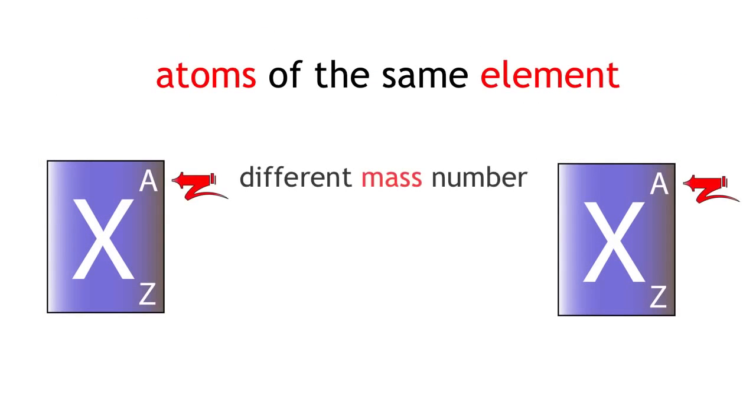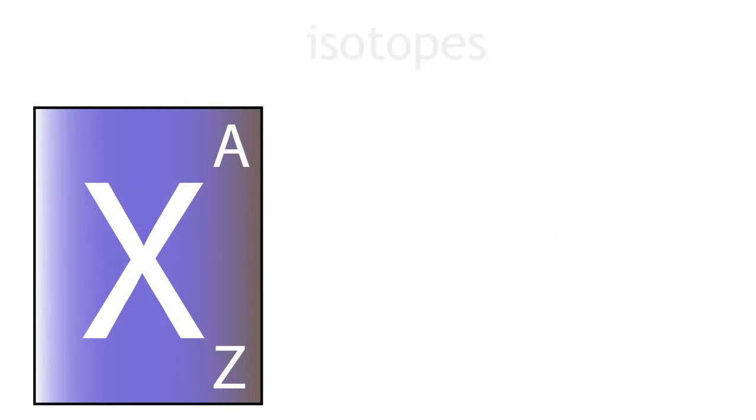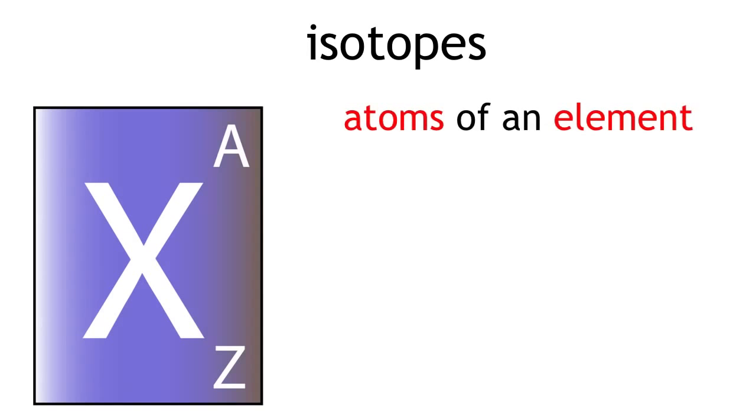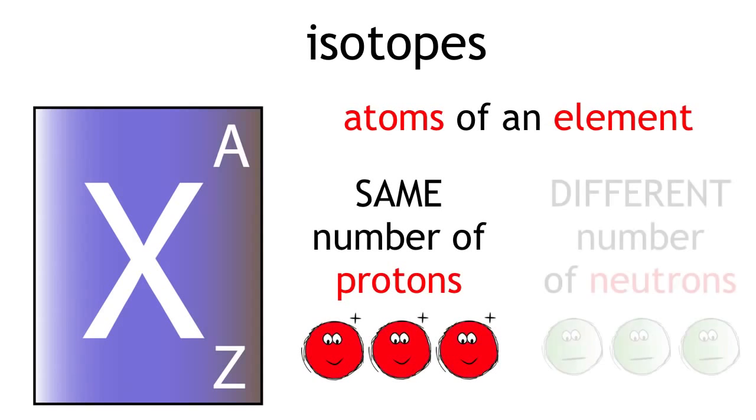Atoms of the same element with a different mass number are known as isotopes. They are defined as atoms of an element which have the same number of protons but a different number of neutrons.